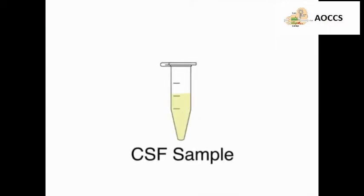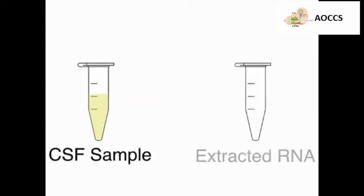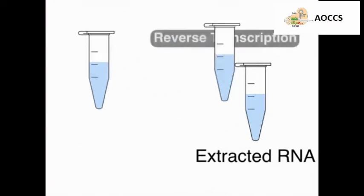This is accomplished by first isolating total RNA from cerebrospinal fluid samples. The second step is to perform reverse transcription in order to transcribe the RNAs into cDNAs.